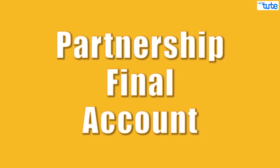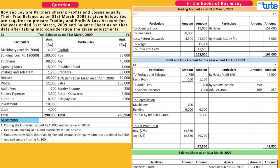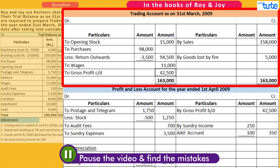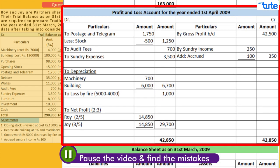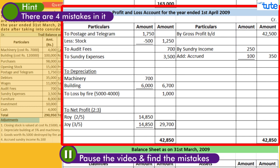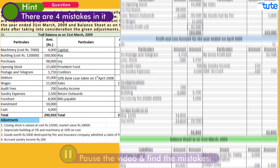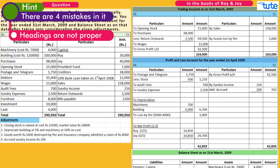Now you guys must be familiar with the topic on partnership final accounts. Here is one question with the solution — can you find what mistakes are there? We'll give you a hint: there are four mistakes in it.